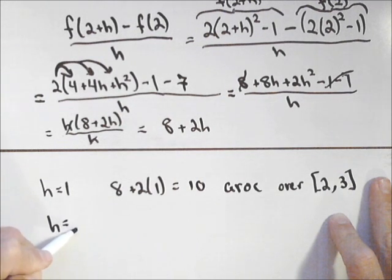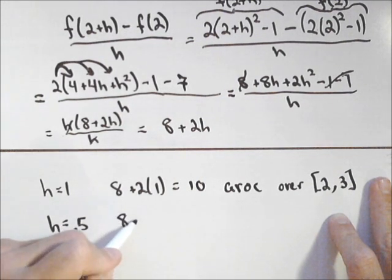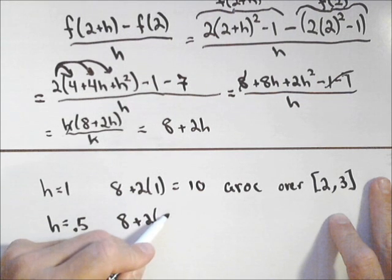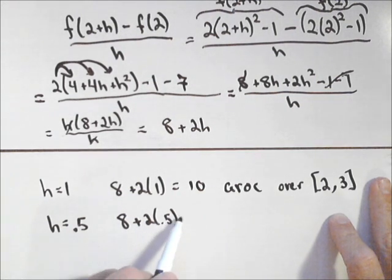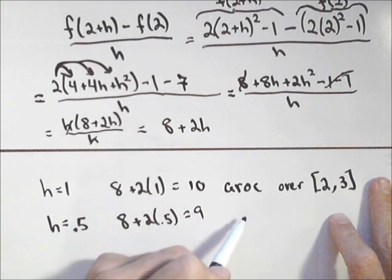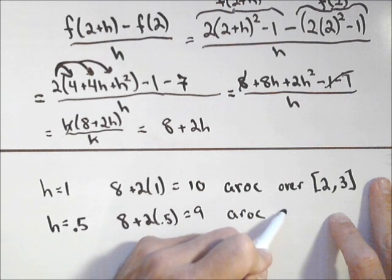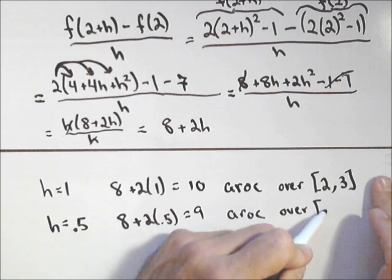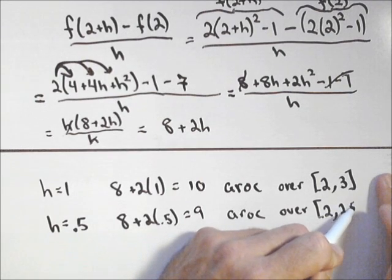h equals 0.5, so 8 plus 2 times 0.5. That equals 9. That gives us the average rate of change over 2 and 2.5.